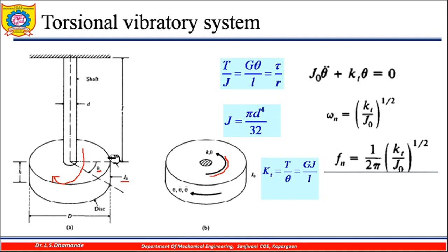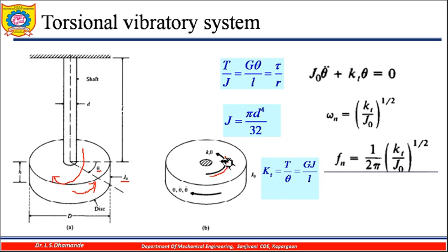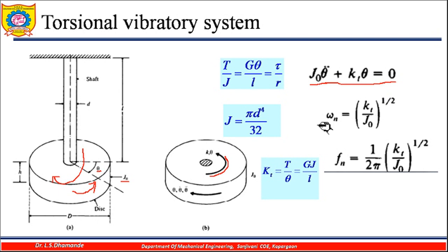Writing the equation of motion: when angular displacement θ is given to the disc, the inertia torque J·θ̈ and the restoring torque k_t·θ act in the same sense and sum to zero, giving J·θ̈ + k_t·θ = 0. From this, the natural circular frequency is omega_n = √(k_t / J₀), and the natural frequency is f_n = (1/2π)√(k_t / J₀).